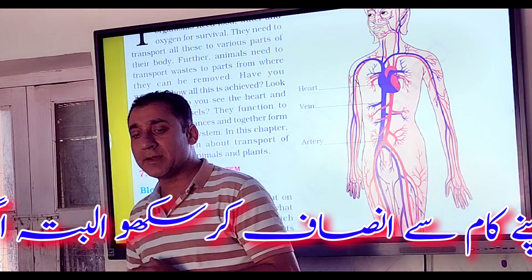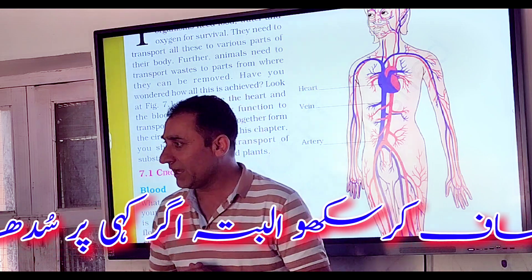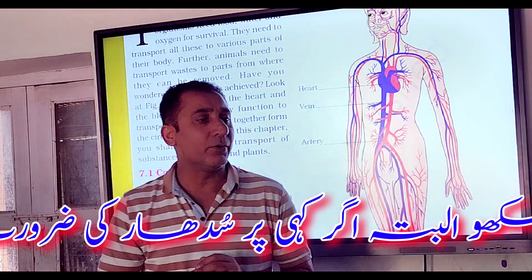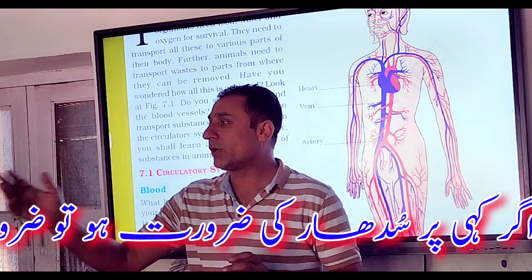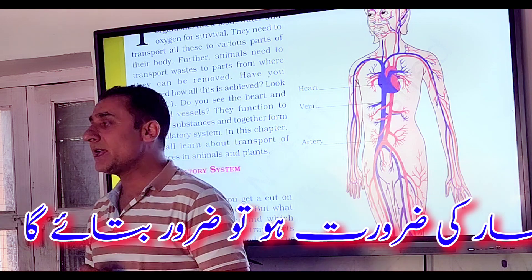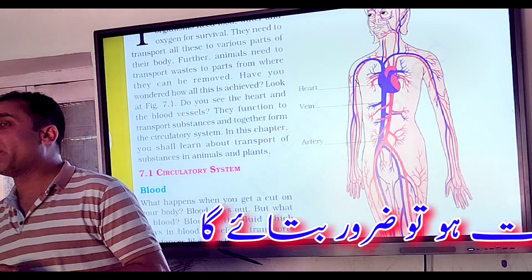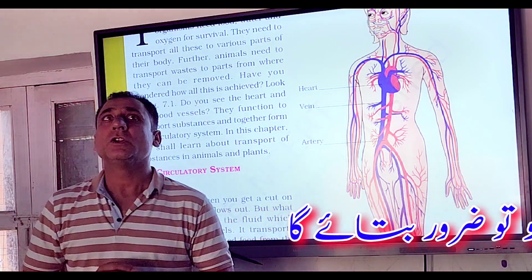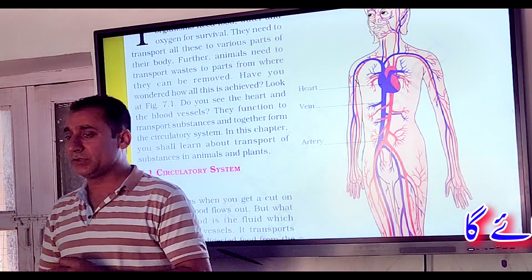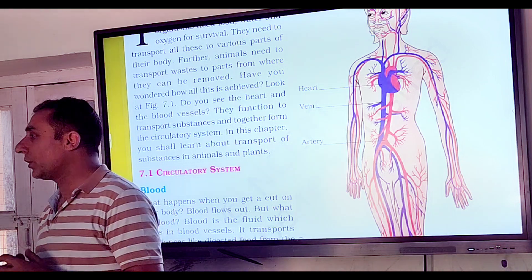What's your name? Amoeba — very good. Where are Amoeba found? Pond water — very good. Amoeba is found in pond water.